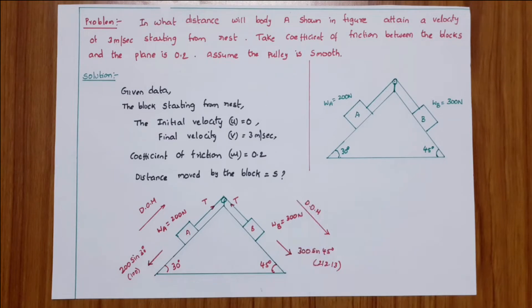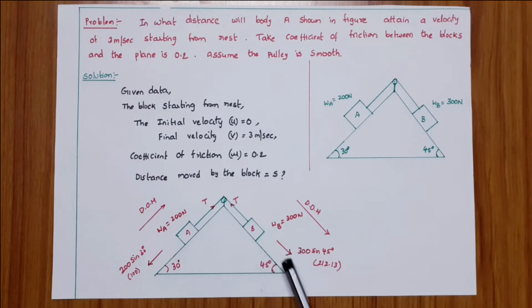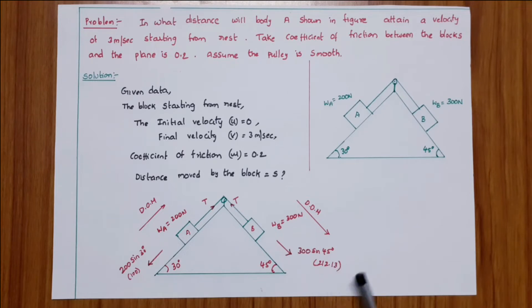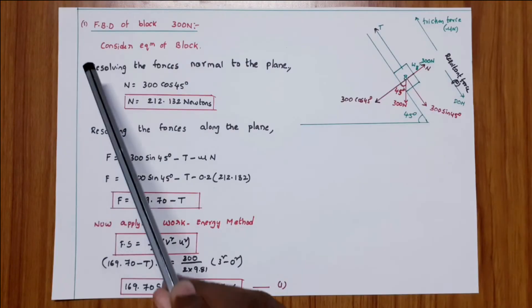From the given figure, the inclination for block B is 45 degrees and for block A is 30 degrees. First, we find the direction of motion by finding the component of each body along the plane. The component for block B is 300 sin 45, which equals 212.13 N. The component for block A is 200 sin 30, which equals 100 N. Since 212.13 is the greater value, block A moves towards block B — that is, block A moves upward.